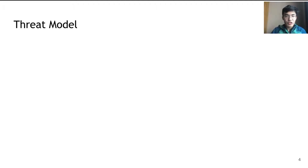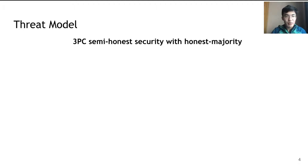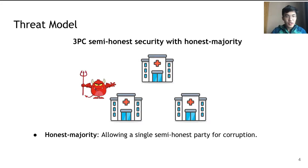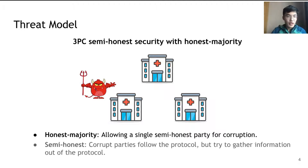Both privacy-preserving machine learning inference and training can be achieved via secure multi-party computation. In our work, we consider a three-party semi-honest security with honest majority model, where honest majority means we allow a single semi-honest party for corruption, and semi-honest means that corrupt parties will follow the protocol but will try to gather information out of it.